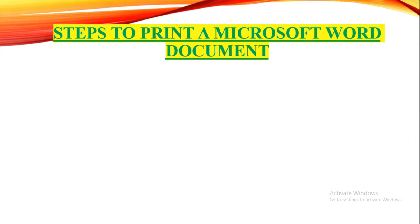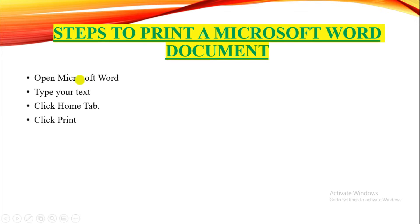Today we will be studying how to print a Microsoft Word document. There are many options in printing, and we will be discussing some of them. The steps to print are: open Microsoft Word, type your text, click the File tab, and click Print.